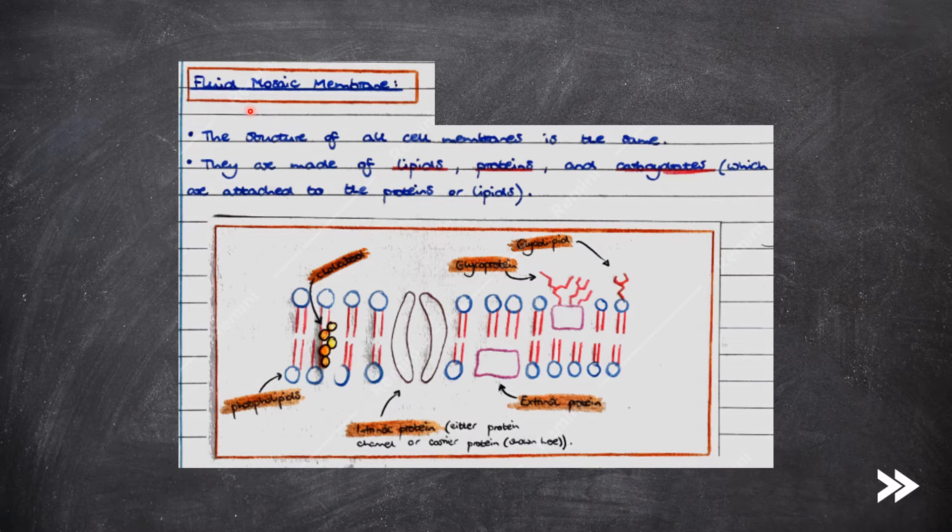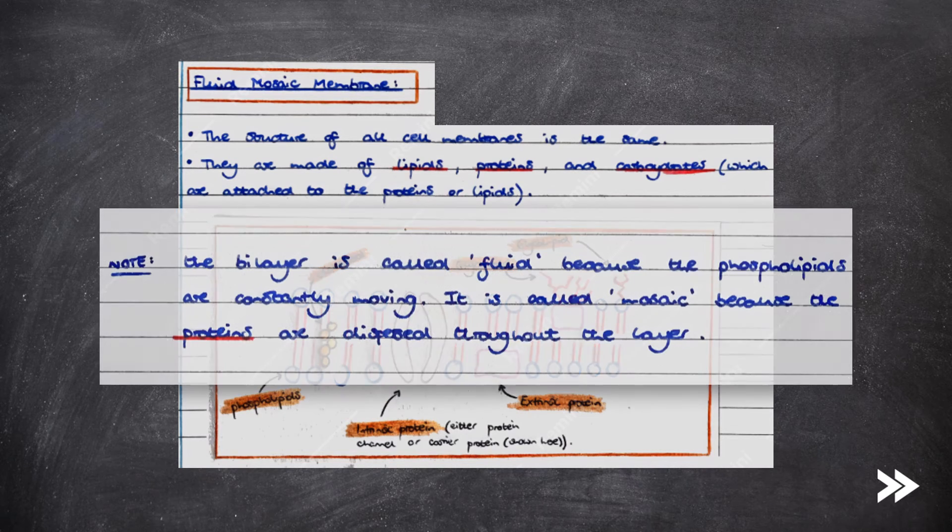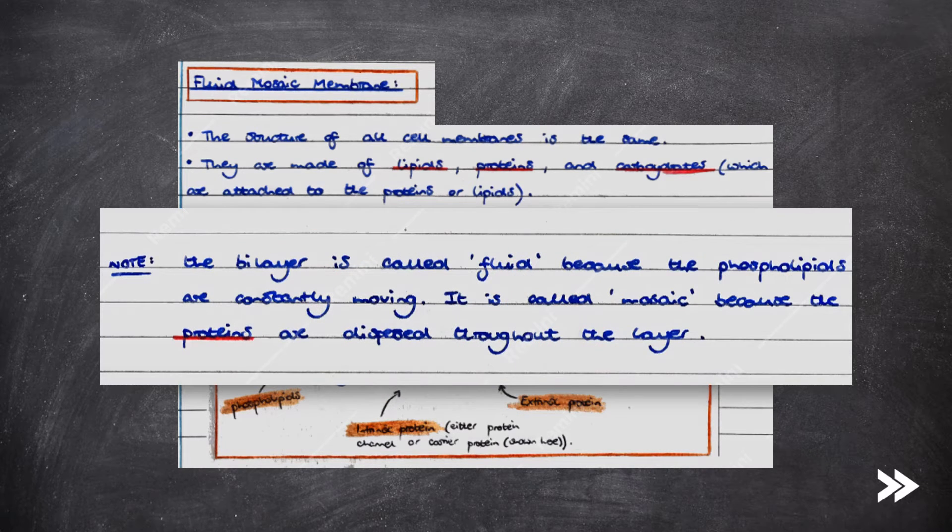So let's look at the fluid mosaic membrane. The structure of all cell membranes is the same. They are made of lipids, proteins and carbohydrates, which are attached to the proteins or lipids. Note that the bilayer is called fluid because the phospholipids are constantly moving. It is called mosaic because the proteins are dispersed throughout the layer.